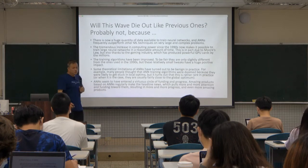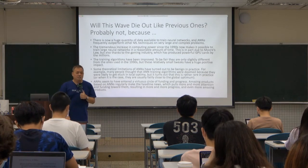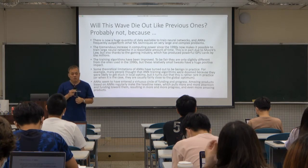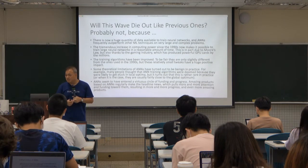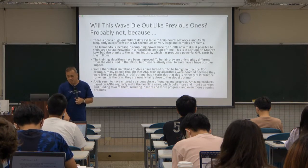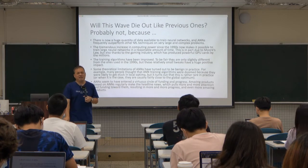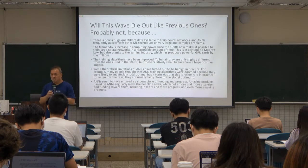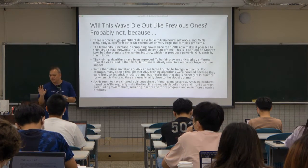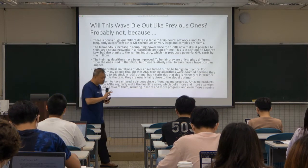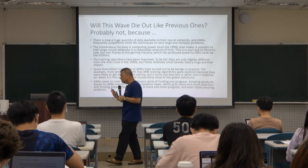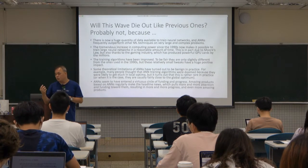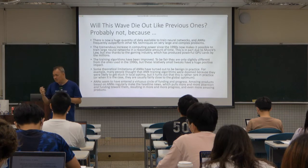You may ask: since the second wave of AI died because ANN performed worse than machine learning models, why is it so powerful nowadays? What's the difference? There are three differences between the 1990s and now — the first two are actually accidents, and the last one is due to researchers' effort in artificial neural networks.